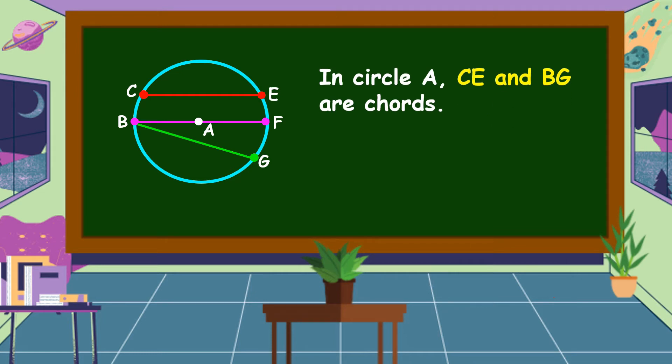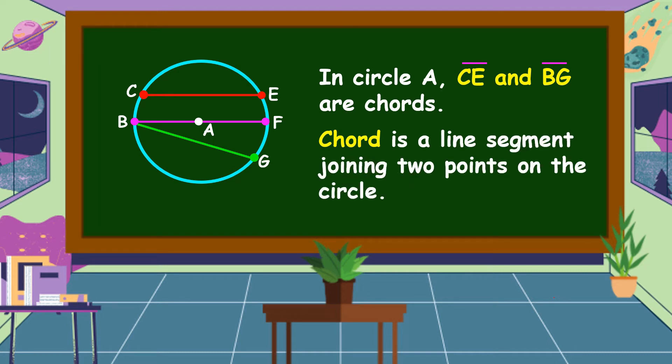In circle A, line segment CE and line segment BG are chords. What is a chord? A chord is a line segment joining two points on the circle.